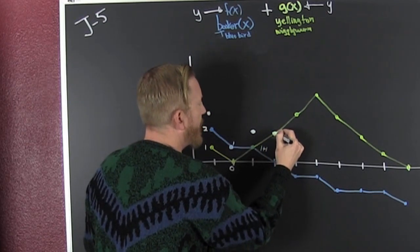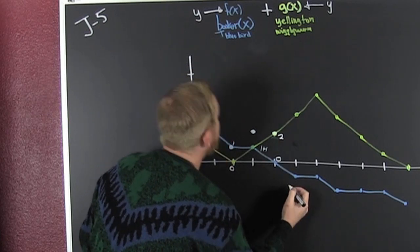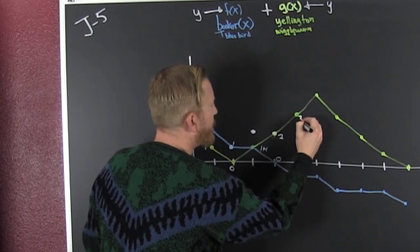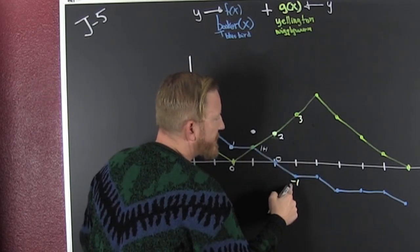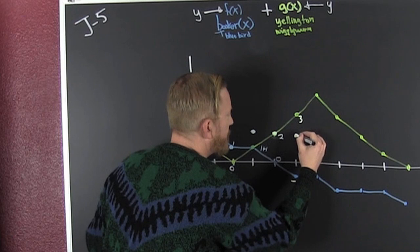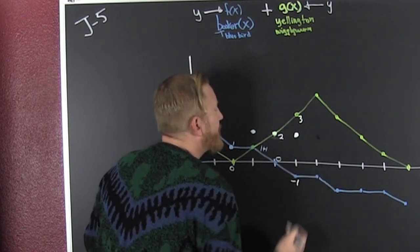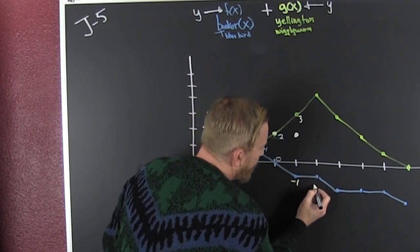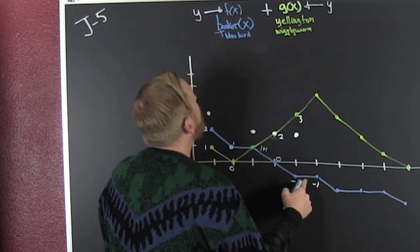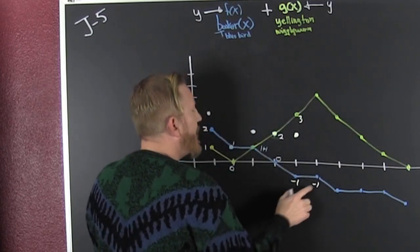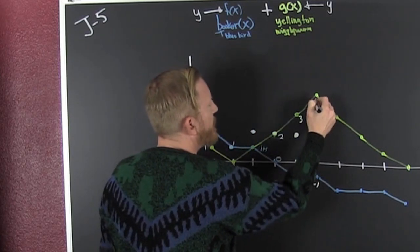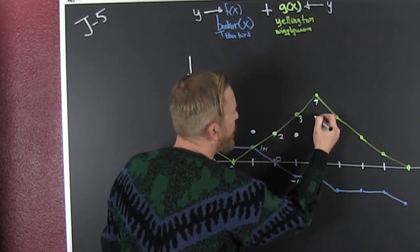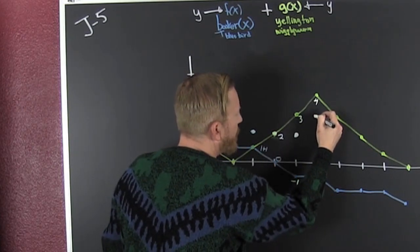So 0 plus 2, that's 2. So I put a dot right there. Here, Booker is minus 1, and Yellington is 3. Minus 1 plus 3 is 2, so I put a dot right there, because I'm adding their y values. So then this here is minus 1 — Booker was minus 1. We're adding their outputs. That's 4. Minus 1 plus 4 is 3, so I put a dot right there. We're doing J5.